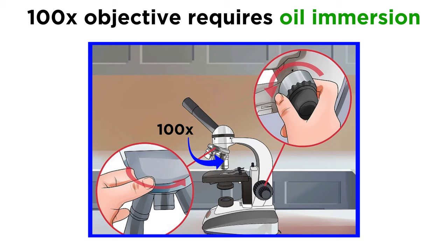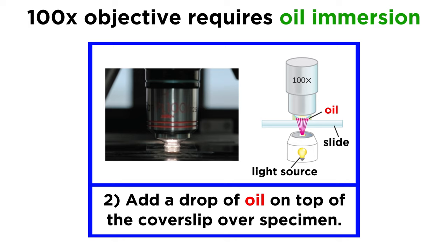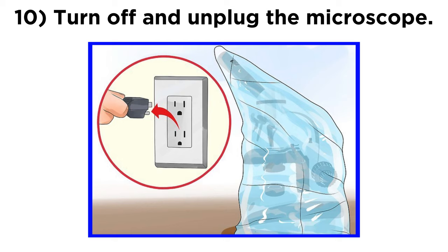It's important that when using the one hundred times objective, it is set up for oil immersion to improve the resolution of the image. To do this, rotate the nosepiece so that the specimen is between the forty and one hundred times objectives, and add a drop of oil on top of the cover slip which sits over the specimen. Then rotate the nosepiece so that the one hundred times objective is submerged in the oil and over the specimen without scraping the lens.